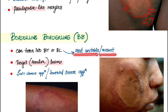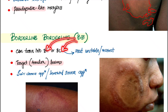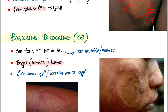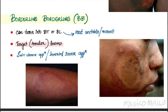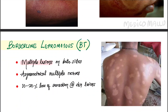Borderline-borderline (BB) is the most unstable or rarest type because it usually turns into either BT or BL — either it improves or worsens. The characteristic appearance is target or annular lesions, sometimes described as a 'swiss cheese' appearance or 'inverted saucer' appearance.